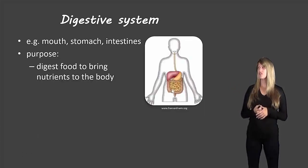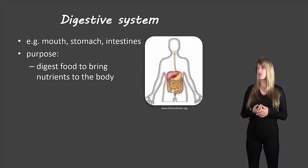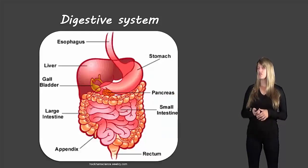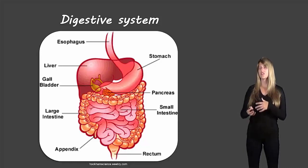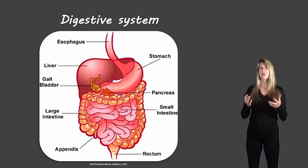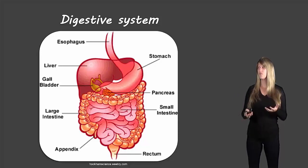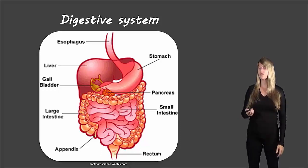The next system is the digestive system. It contains organs like the mouth, stomach, and intestines, and its purpose is to digest food so that nutrients can be brought to the body cells. Food moves down the esophagus into the stomach, then into the small intestines, large intestines, and the waste goes through the rectum and out the anus. Accessory organs — the liver, gallbladder, and pancreas — help with digestion without food actually traveling through them.